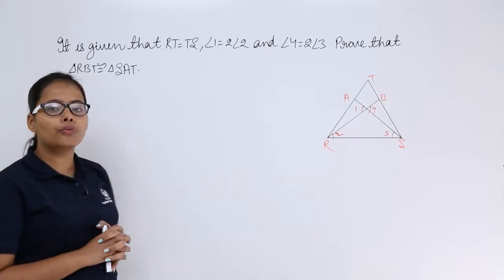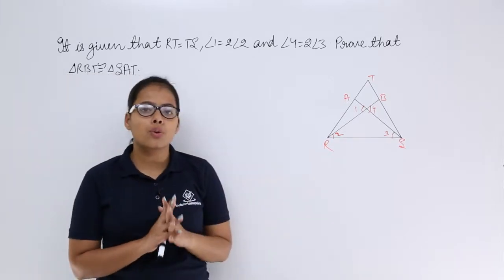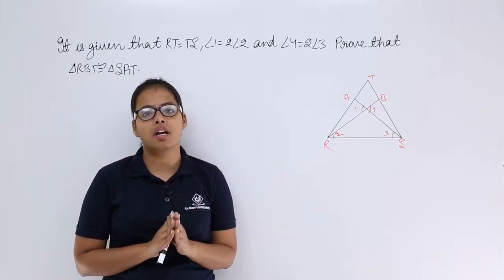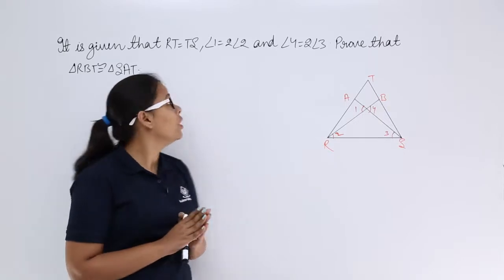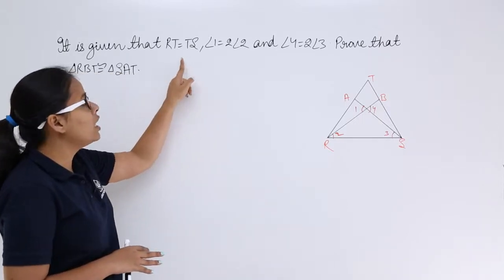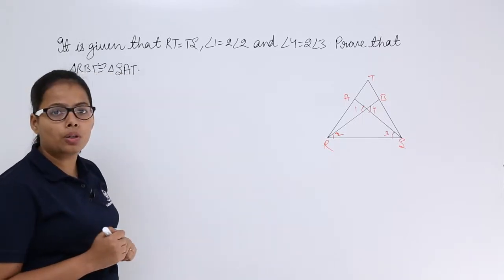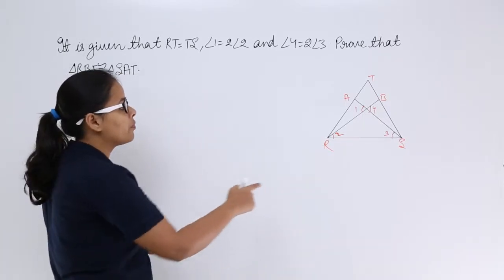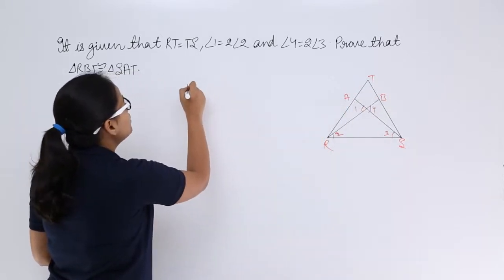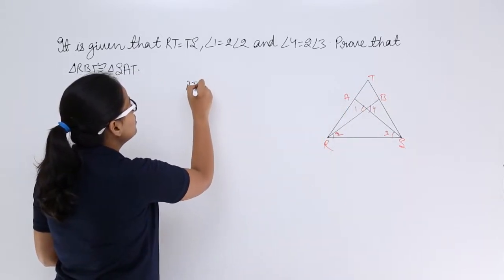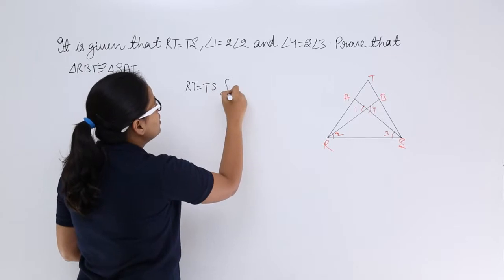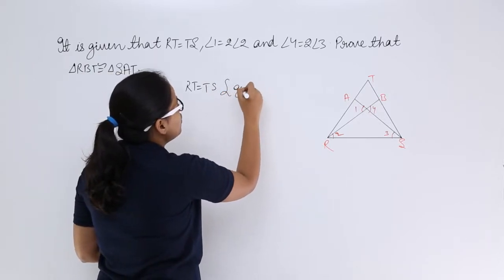So how can you prove that? First of all, what you will do is write out the given conditions. You know that you have been given that RT is equal to TS.